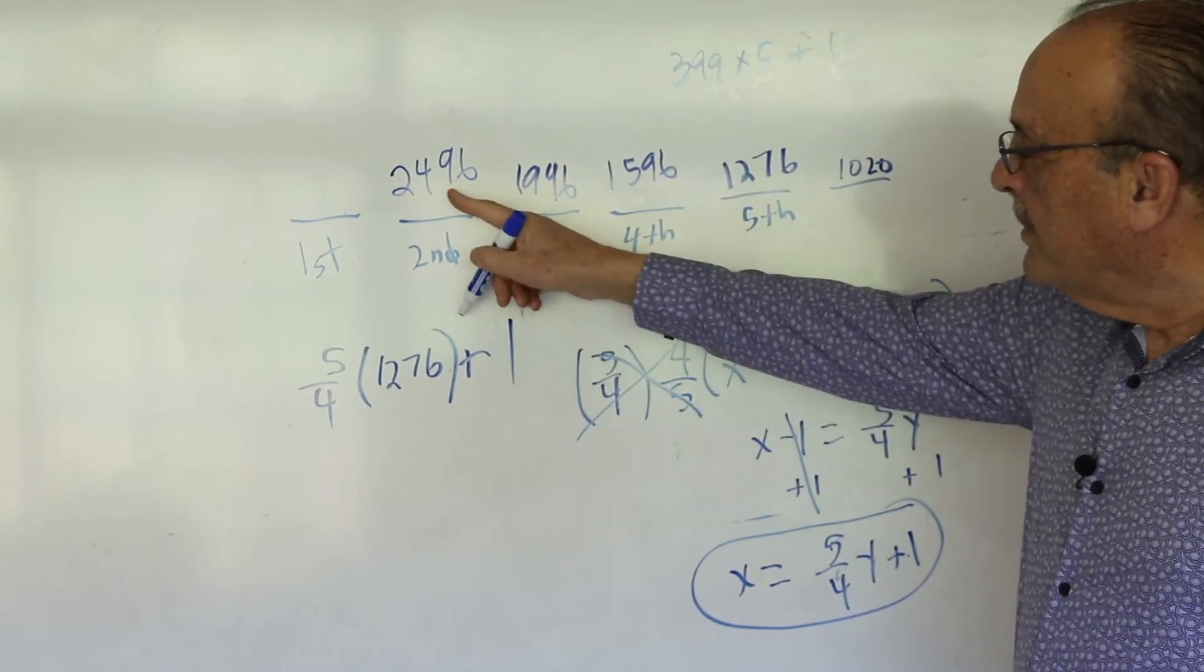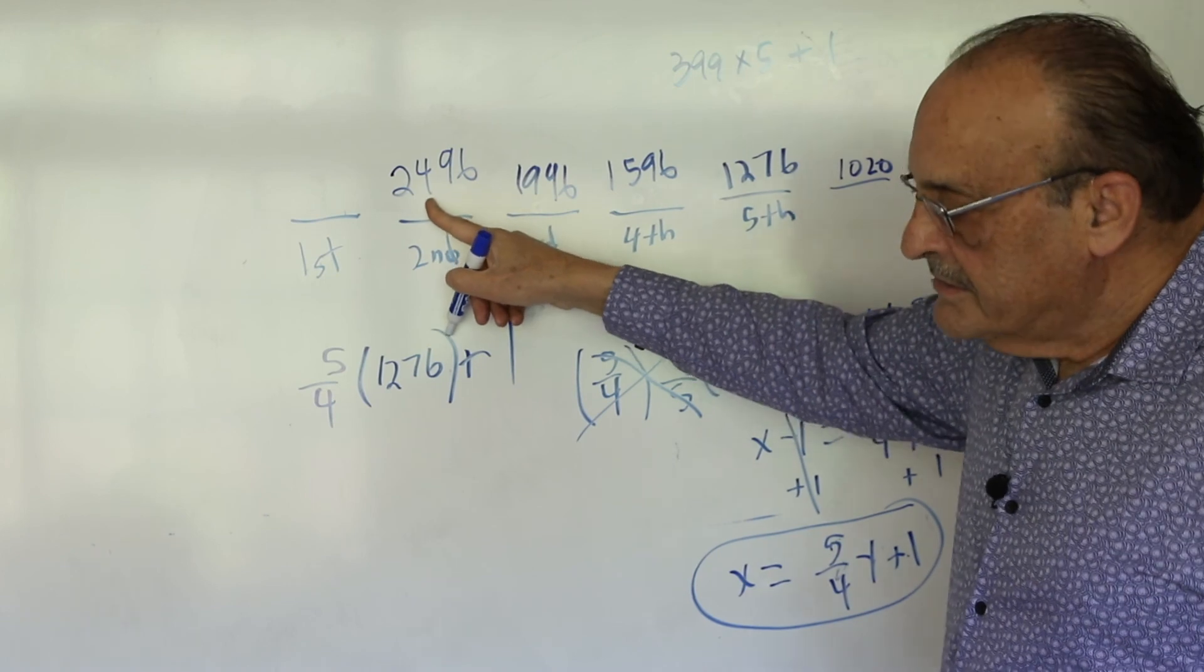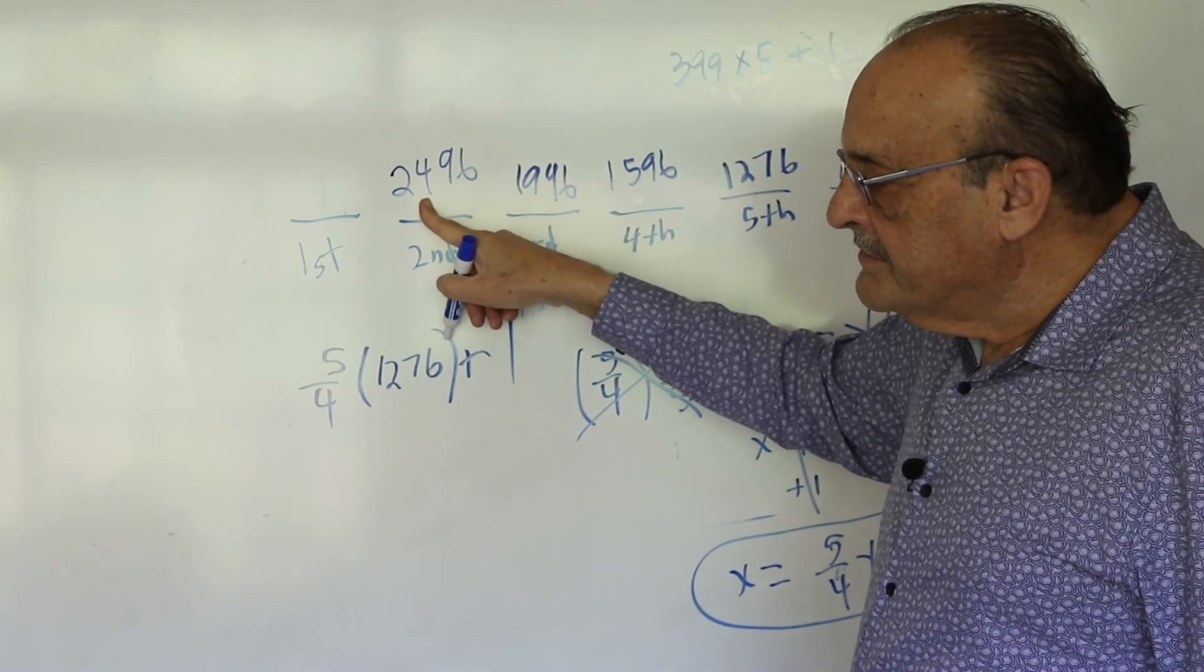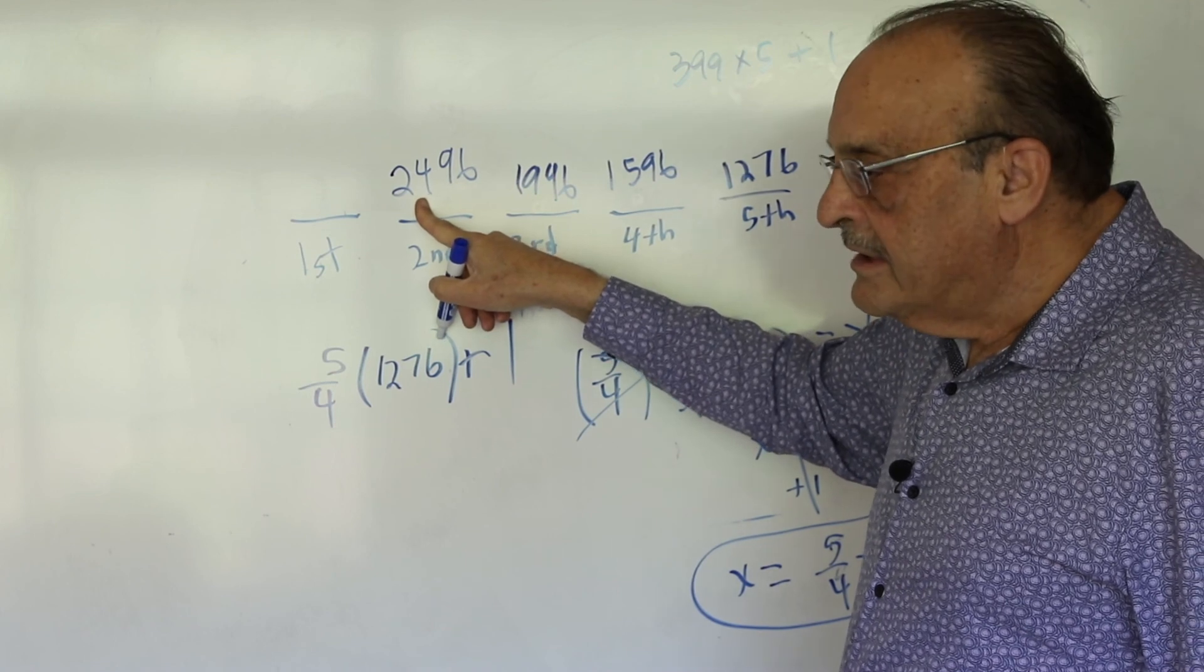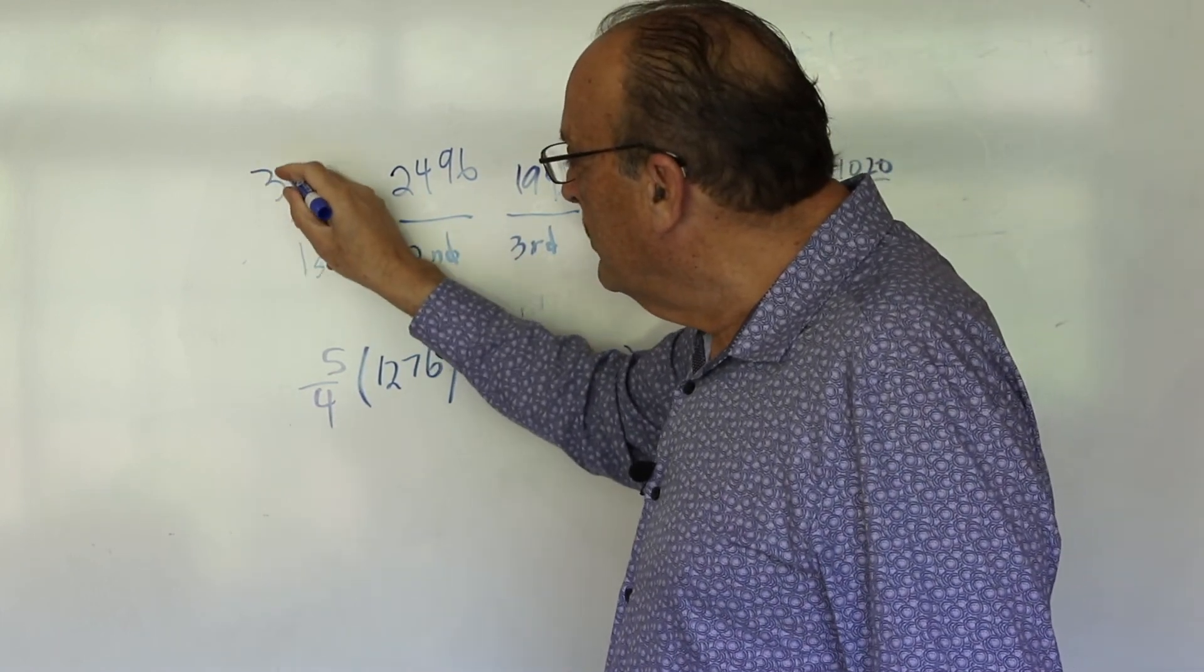Divide this by 4. We get 624. 624 times 5 is 3120. Plus 1 is 3,121.